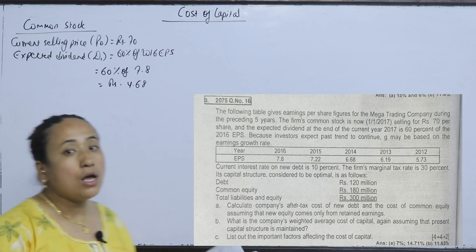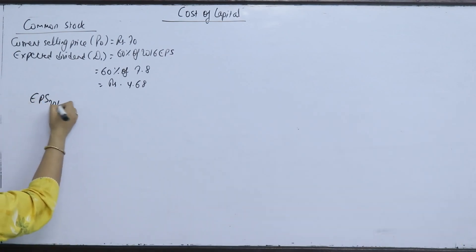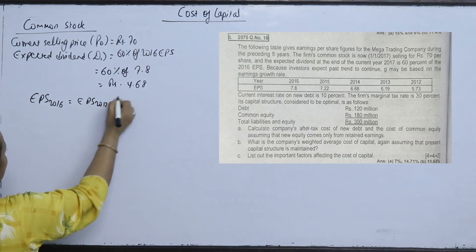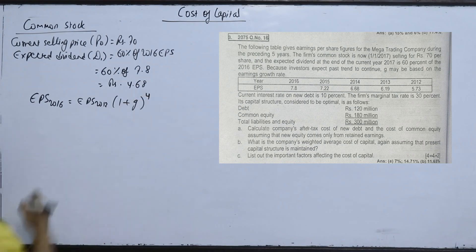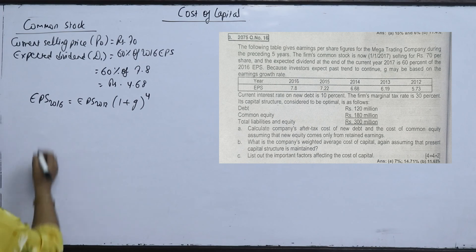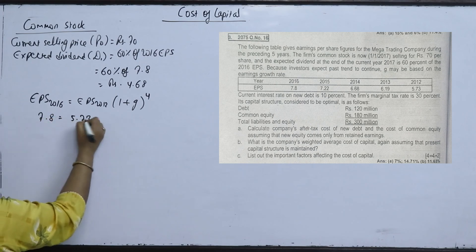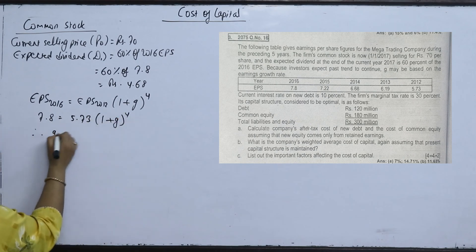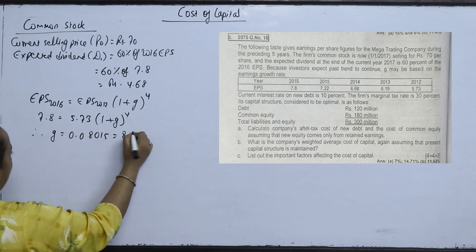Using the first and last EPS data: EPS in 2012 is 5.73 and EPS in 2016 is 7.8, over 4 years. Solving for g: (1 plus g) to the power 4 equals 7.8 divided by 5.73, giving g approximately 0.08015, or about 8%.